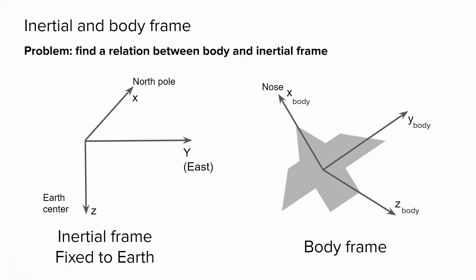We have inertial frame fixed to Earth. X axis of this frame is directed toward North Pole, Y and Z axis are oriented to East direction and Earth center respectively.